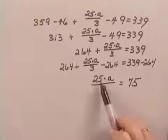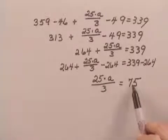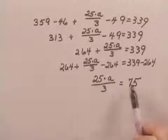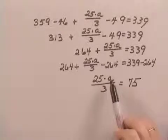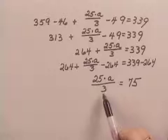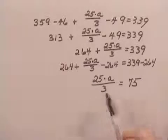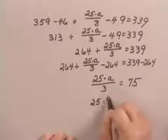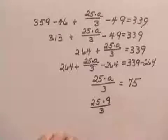I see 25 on the left side. I see 75 on the right side. I know 25 times 3 is 75. I know that 9 divided by 3 is 3, so I'm going to try 9. 25 times 9 divided by 3. Does that equal 75?